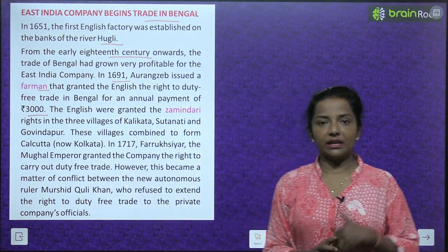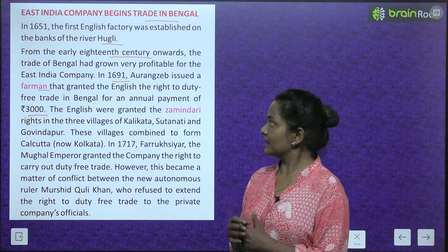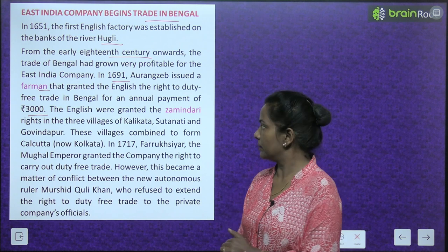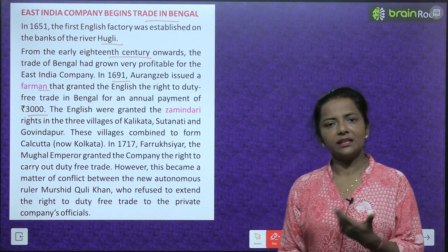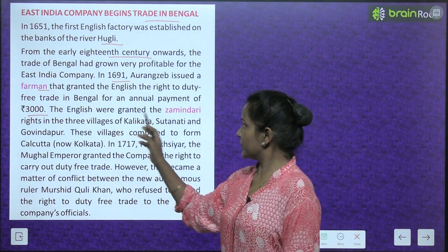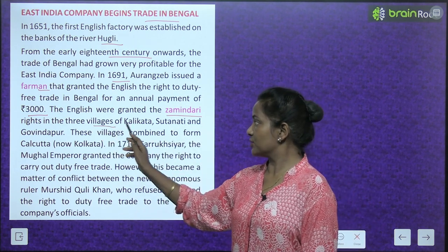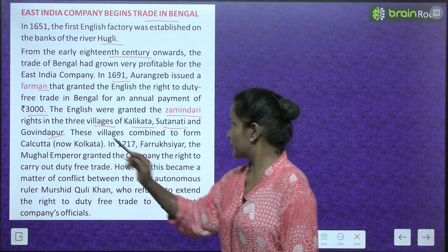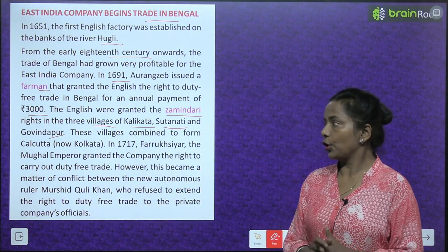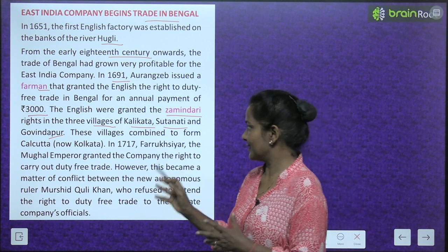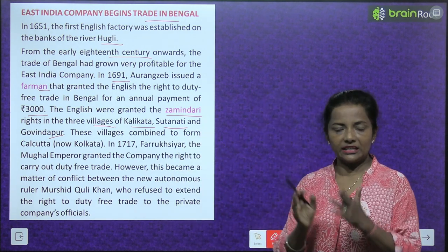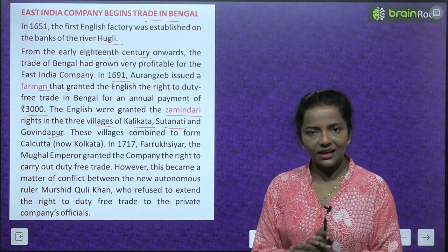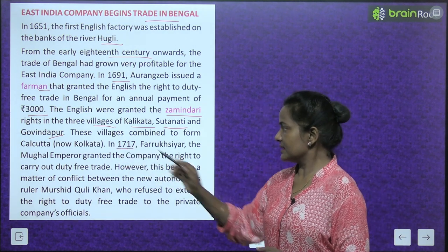Aurangzeb gave the English duty-free trade rights in Bengal for only Rs. 3000 annual payment. The English were granted the zamindari rights in the three villages of Kalikata, Sutanathi, and Govindapur. These villages combined to form Calcutta, now Kolkata. In 1717, Farrukhsiyar, the Mughal Emperor, granted the company the right to carry out duty-free trade.